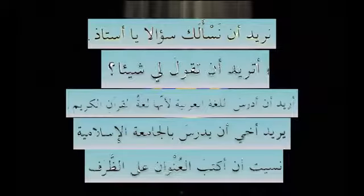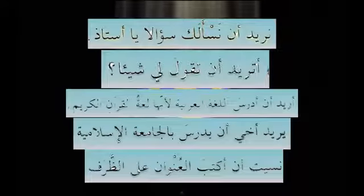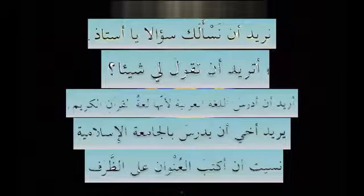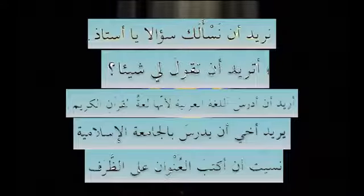One final example: 'nasitu an aktuba al-'unwan 'ala al-zarf' — I forgot to write the address on the envelope. This gives us practice on how different forms of masdar mu'awwal can come in a sentence depending on who it is directed to: 'uridu,' 'turidu,' 'nuridu,' 'yuridani.' Inshallah in our next lesson we will start lesson number 17 from the Medina Book 2, and we can use the dialogues to see how it builds up. Until then, assalamu alaikum warahmatullahi wabarakatuh.